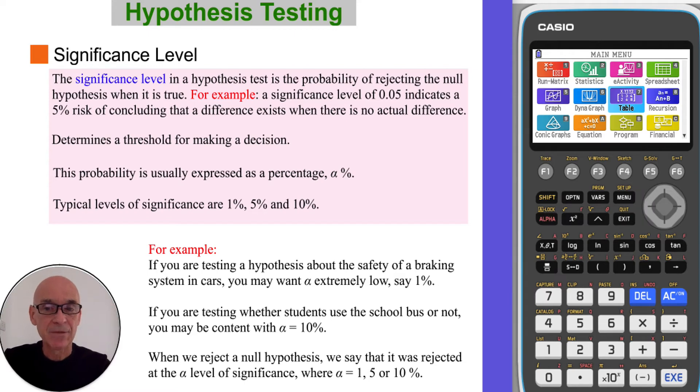The significance level in a hypothesis test is the probability of rejecting the null hypothesis when it's true. For example, a significance level of 0.05 indicates a 5% risk of concluding that there is a difference when in fact there is actually no difference between the observed and expected values. So the significance level basically determines a threshold for making a decision. As I said, it gives us the critical value.